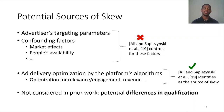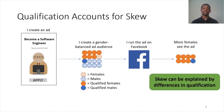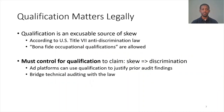What this prior work did not consider as a potential source of skew is potential differences in qualification in the targeted audience. To see why this is a relevant factor in the context of job ads, going back to the example, we can see that even though the advertiser targeted a gender-balanced audience, if we take into account how many of those people are actually qualified for the job being advertised, we can see that the skew can be explained by differences in qualification. So in this case, more females see the ad because there are a greater fraction of qualified females in the audience.